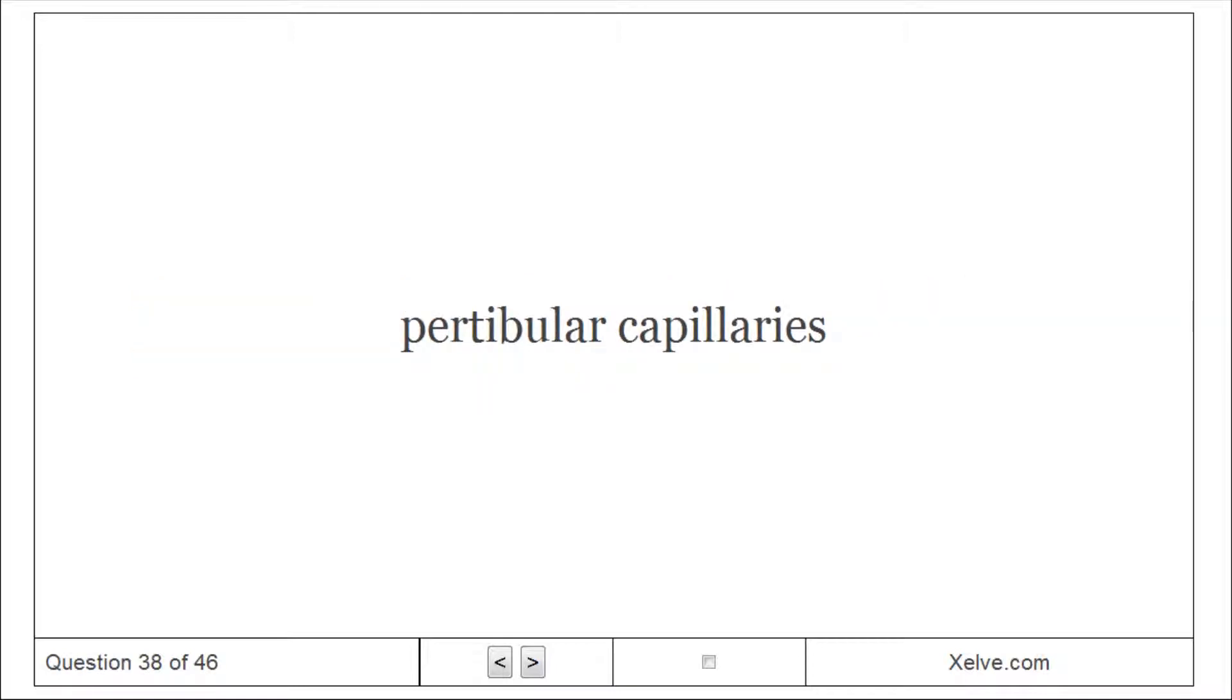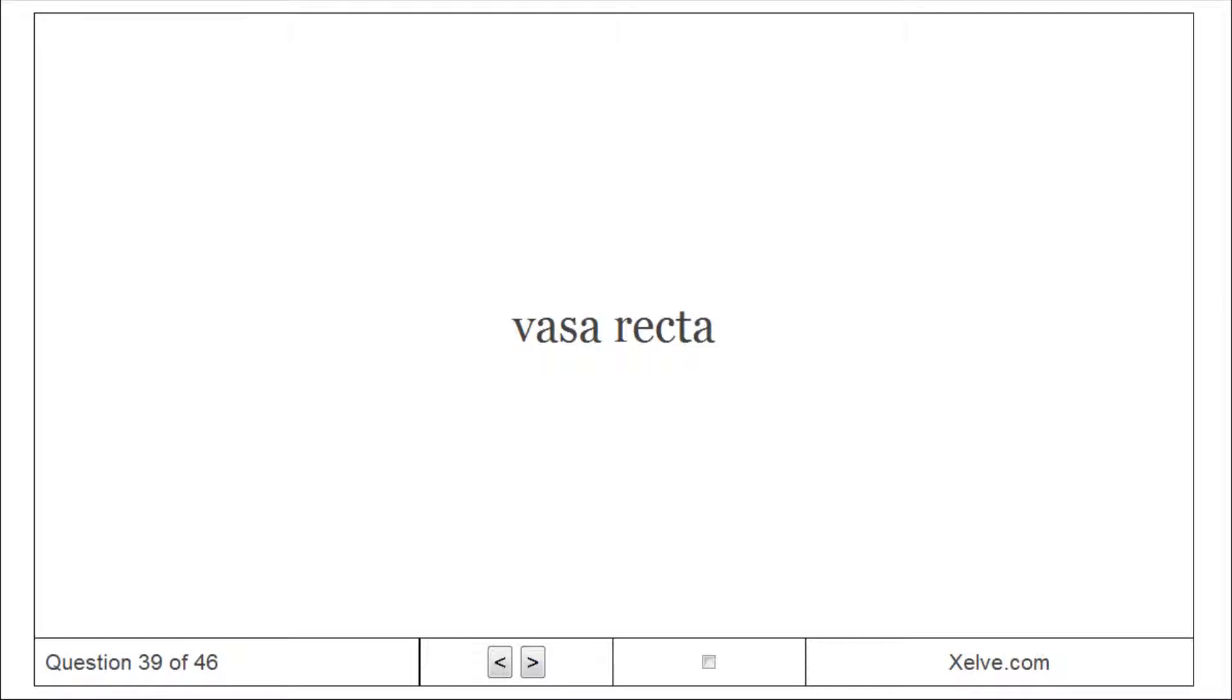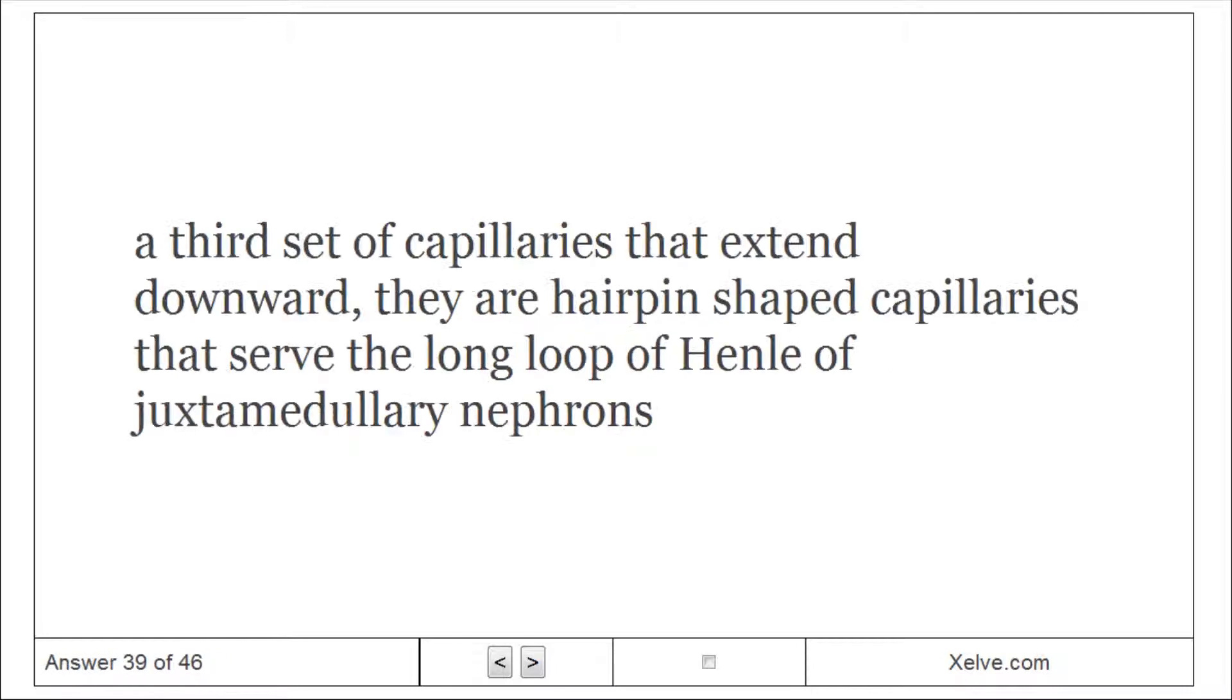Peritubular capillaries: Branches of the efferent arteriole which surround the proximal and distal tubules. Vasa recta: A third set of capillaries that extend downward, they are hairpin-shaped capillaries that serve the long loop of Henle of juxtamedullary nephrons.